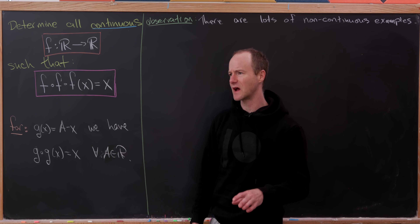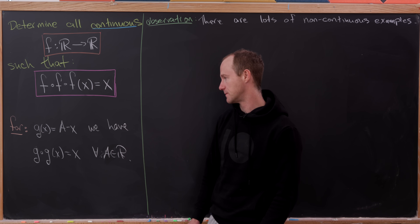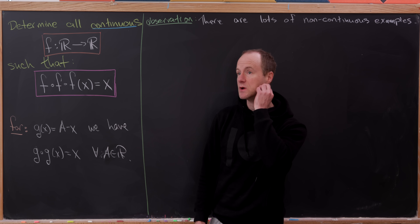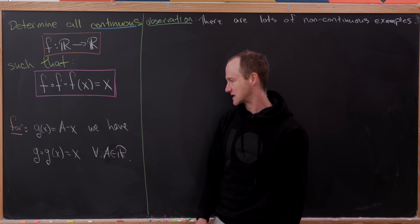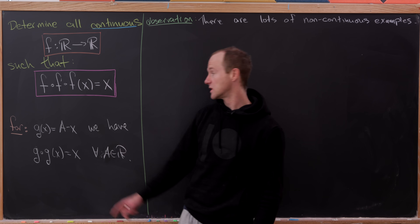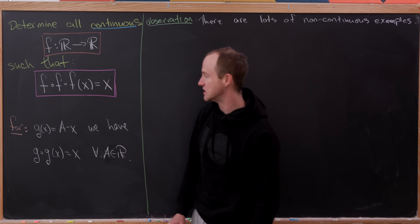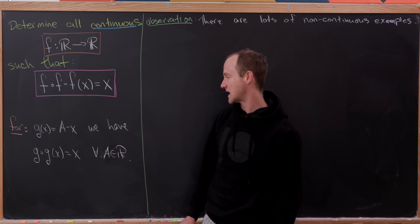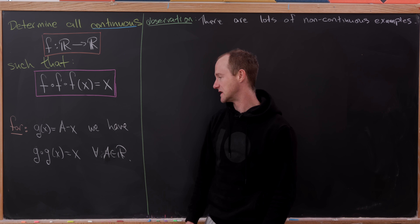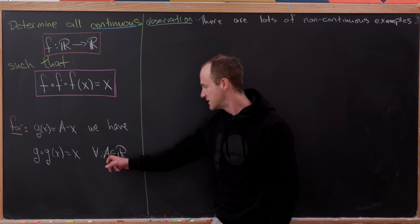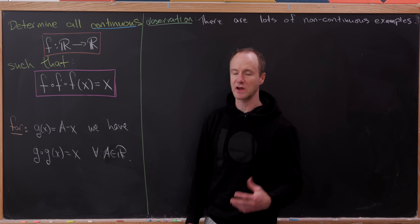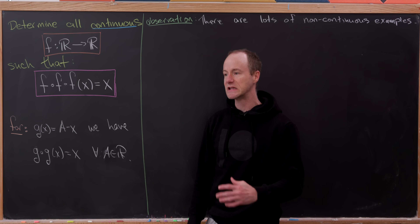Before we get started, I'd like to look at a couple of tweaks of this problem. The first is: what are some continuous functions where if you compose them with themselves twice, you get back to the identity? Well, there are tons of those. Maybe the most obvious one is the family defined by g(x) = A minus x. If you compose that with itself, you clearly get back to the identity function — you get x — and this is true for all real values A. So in the case of a two-fold composition, we've got a clear infinite family.